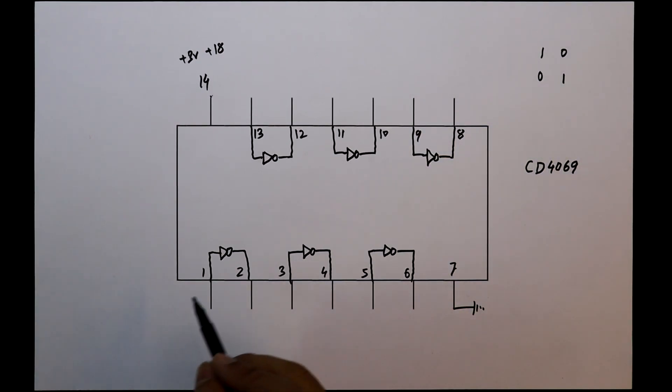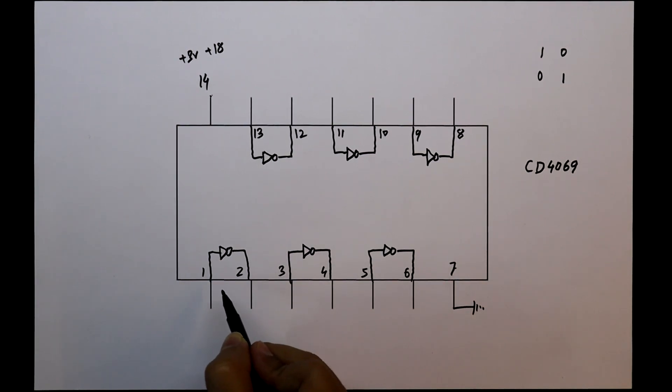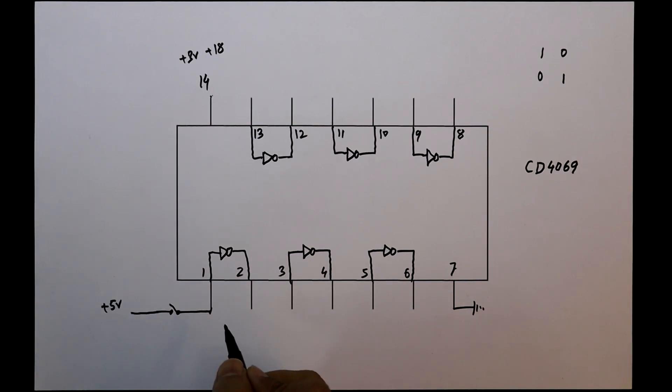To do the practical, we'll use gate number 1. Here, we'll provide plus 5V as input with a switch. And we have to connect a pull-down resistor with the input. To see the input, we'll connect an LED with this and with the output also, we'll connect an LED.